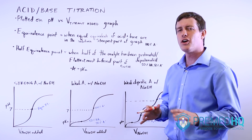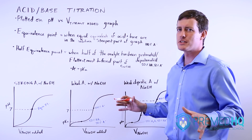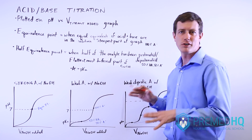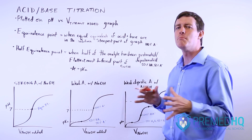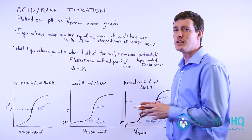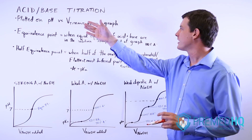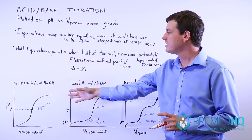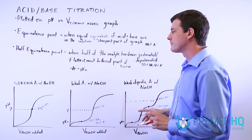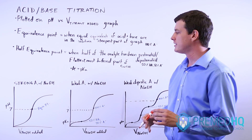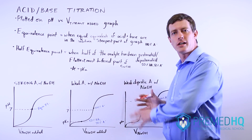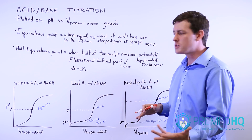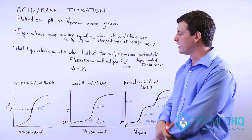As we've mentioned, there are multiple types of titrations. There are redox titrations and some various other types you might encounter. But the most common one you'll see is acid-base titrations, and we'll go through those. These three graphs depict an acid being titrated with NaOH, which is the most common base used for that.